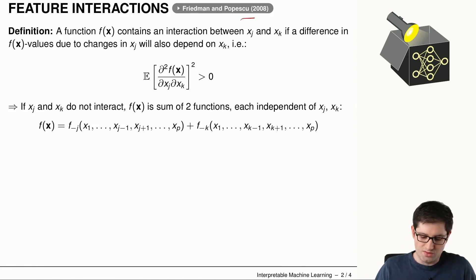Let's look at a mathematical definition of feature interactions that was already introduced in 2008 in this paper here. So essentially, if a function contains interactions between two features, say xj and xk,